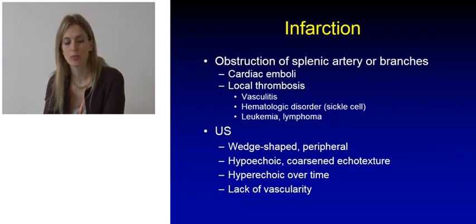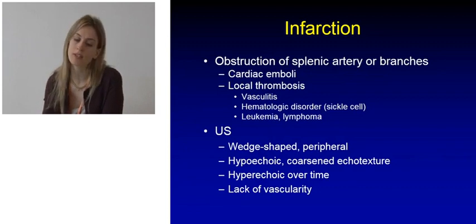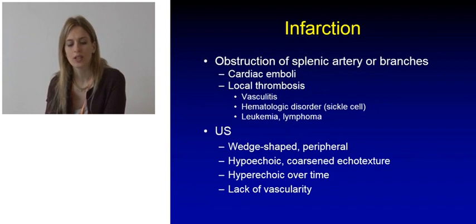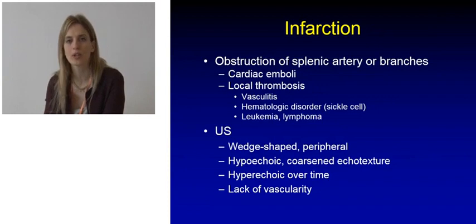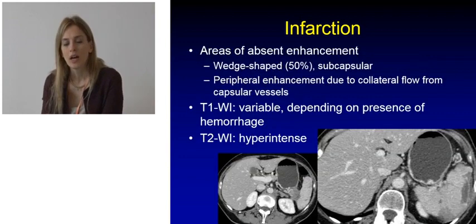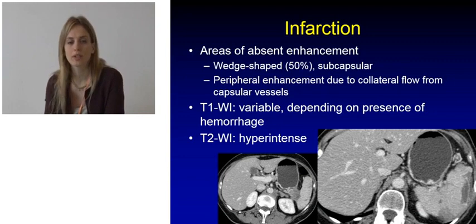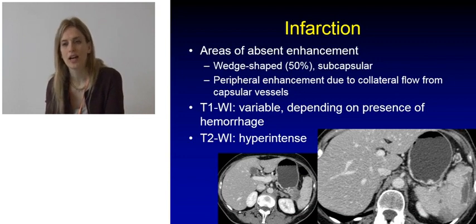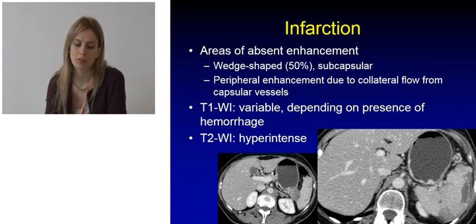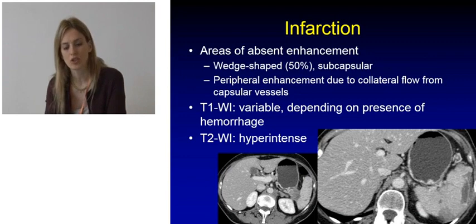Splenic infarction is due to obstruction of the splenic artery or its branches. It can be due to cardiac emboli or local thrombosis, which can be caused by vasculitis, hematologic disorders, leukemia, lymphoma, and other malignant diseases. On ultrasound, we can see wedge-shaped peripheral areas of coarsened echo-texture, which can be hypo- or hyper-echoic depending on the age of the infarct, and typically there is lack of vascularity at color-Doppler imaging. After contrast administration at cross-sectional imaging, we can better appreciate this wedge-shaped area, typically subcapsular, of non-enhancing parenchyma, with some peripheral enhancement due to collateral flow from capsular vessels. On T1-weighted imaging these lesions have variable appearance depending on the presence and age of hemorrhage, and on T2-weighted imaging they are typically hyper-intense.